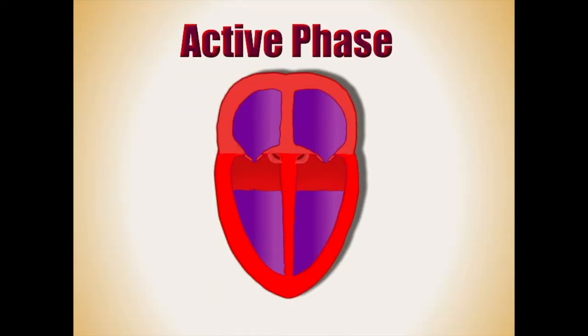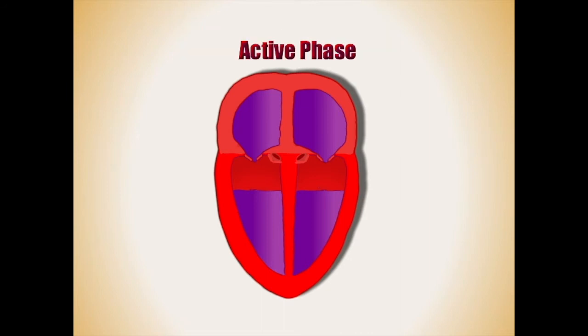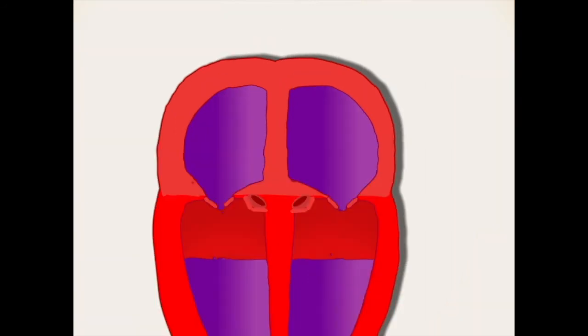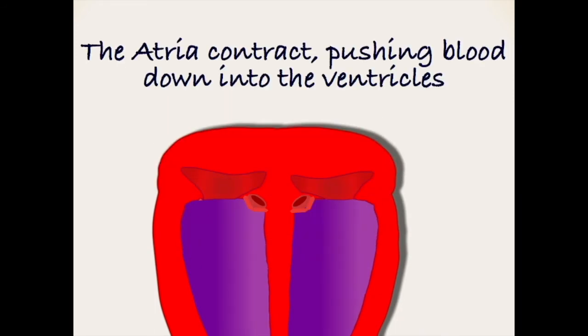With the chambers now full, the active phase of the cycle occurs. First the atrium contract, emptying the contents into the ventricles, increasing the volume of blood within the lower chambers.